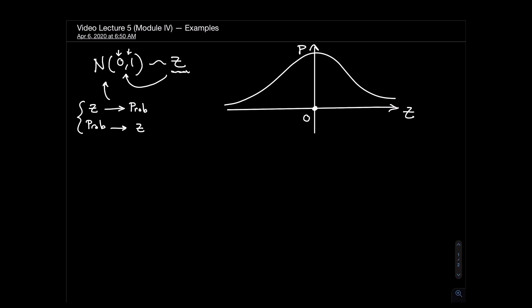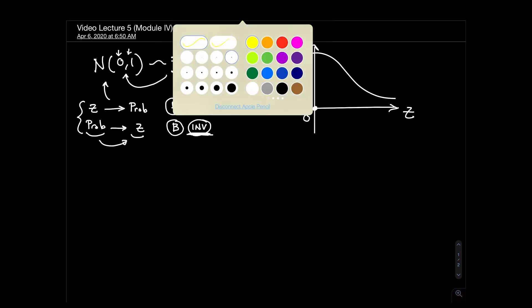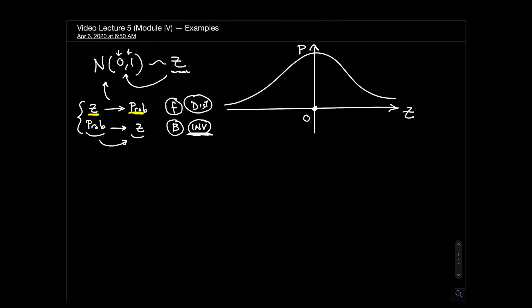I'll give you an example for each one. The forward calculations use the dist command — going from Z to P. The inverse calculations go from P to Z. When I give you the z-value and ask you to calculate the probability, your command must have 'dist' in it: norm.s.dist. If I'm asking you to find z given a probability, you use the inverse command: norm.s.inv. Those are the two commands for standard normal distribution.